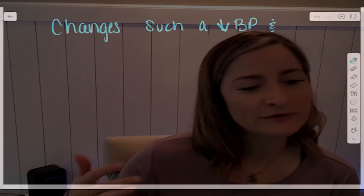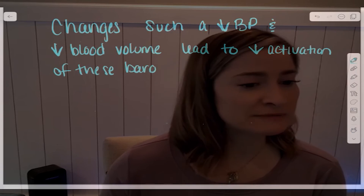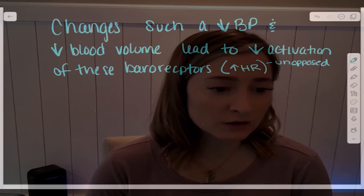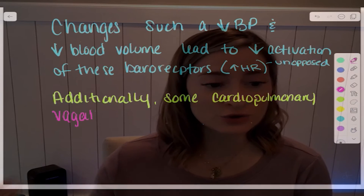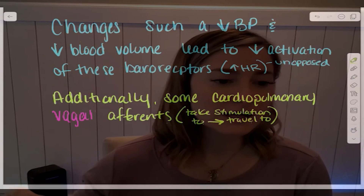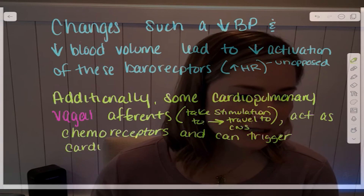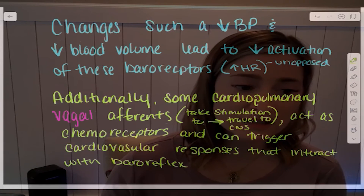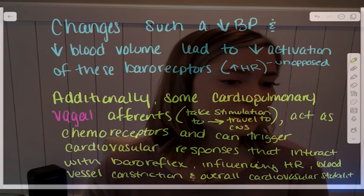Low-pressure baroreceptors detect changes in blood volume and the degree of stretch in the ventricles and atria, as well as the dynamics of lung inflation and deflation. Changes such as hypotension and hypovolemia lead to decreased activation of these baroreceptors. Some cardiopulmonary vagal afferents — which take signals to your CNS — act as chemoreceptors and can trigger a cardiovascular response that interacts with baroreflex mechanisms, influencing heart rate, blood vessel constriction, and overall cardiovascular stability.